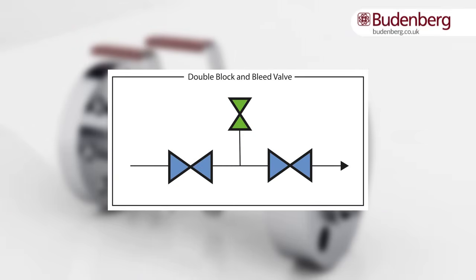The integral double block and bleed valve is made up of two block valves and one bleed valve. If the valve is to be used in a non-critical process, then the use of a single block and bleed valve may be used.